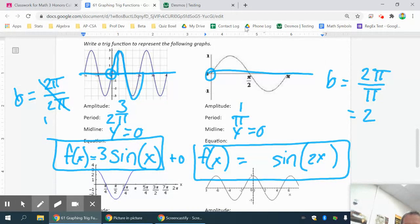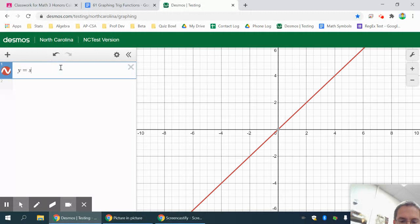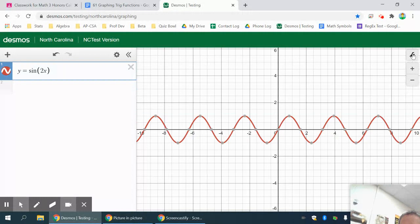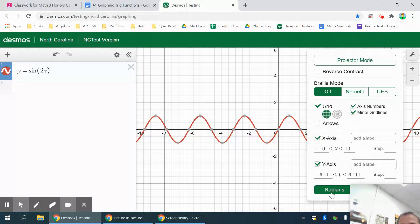Now, you can check these with Desmos. So if we go over to Desmos and try y equals sine of 2x. If you happen to have a flat line there, don't despair. Go to your graph settings and make sure you're in radians. I think a lot of times Desmos will default to degrees, or you might have been in degrees the last time.